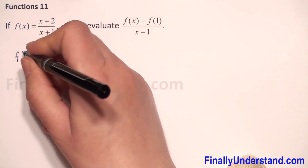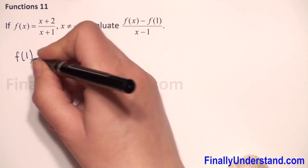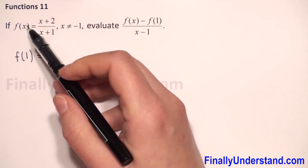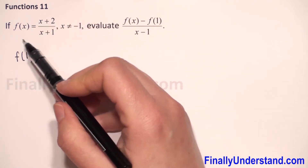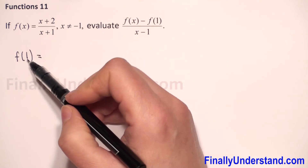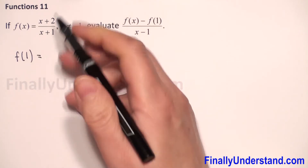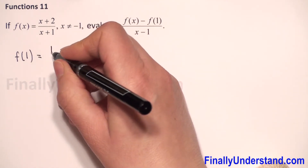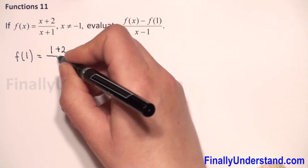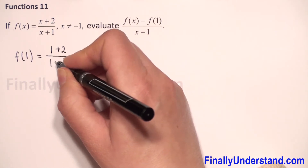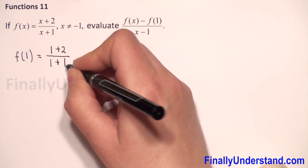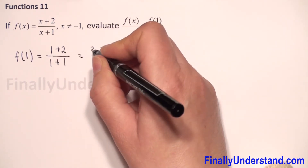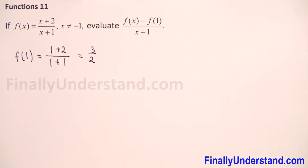f of 1 means I have to replace x in our function by 1. So it will be 1 plus 2 over 1 plus 1. This is equal to 3 over 2.